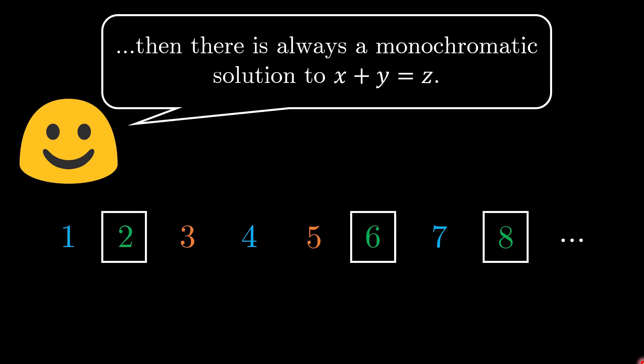So in this example here, for example we have 2, 6, and 8 all of green color and 2 plus 6 equals 8. This result is known as Schur's theorem.